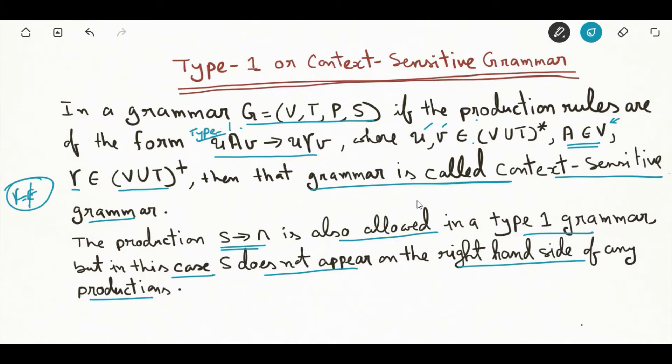So what it means, why we are going to include S is rewritten as null, if null is part of language generated by that grammar. But you have to remember that S will not appear on the RHS of any productions, meaning erasing of a is not permitted in case of context-sensitive grammar.